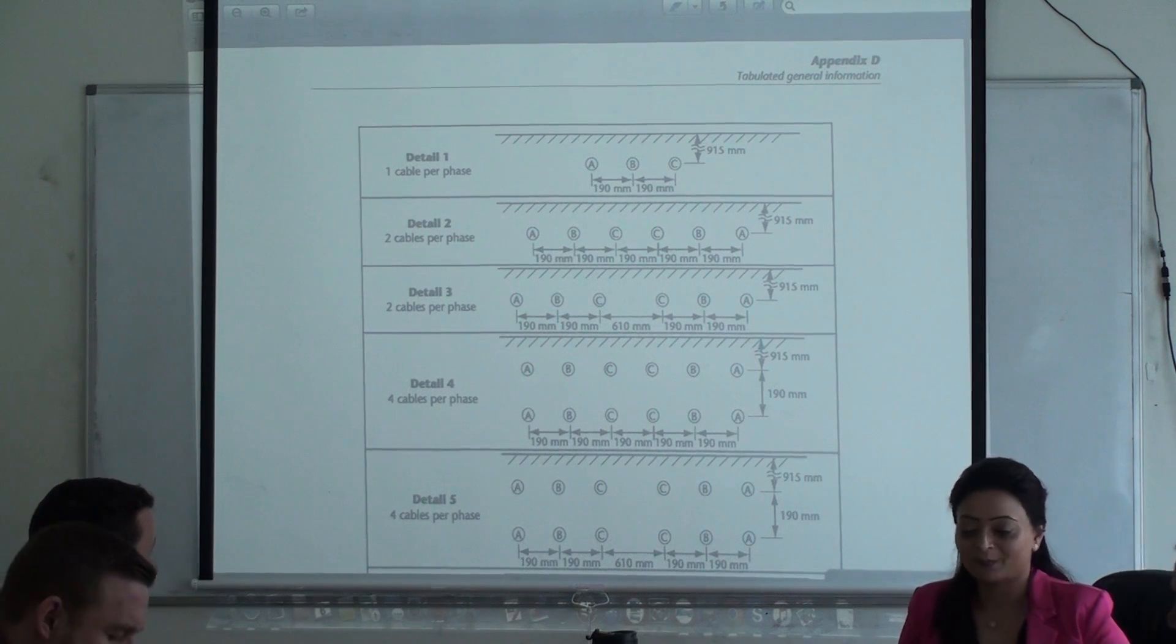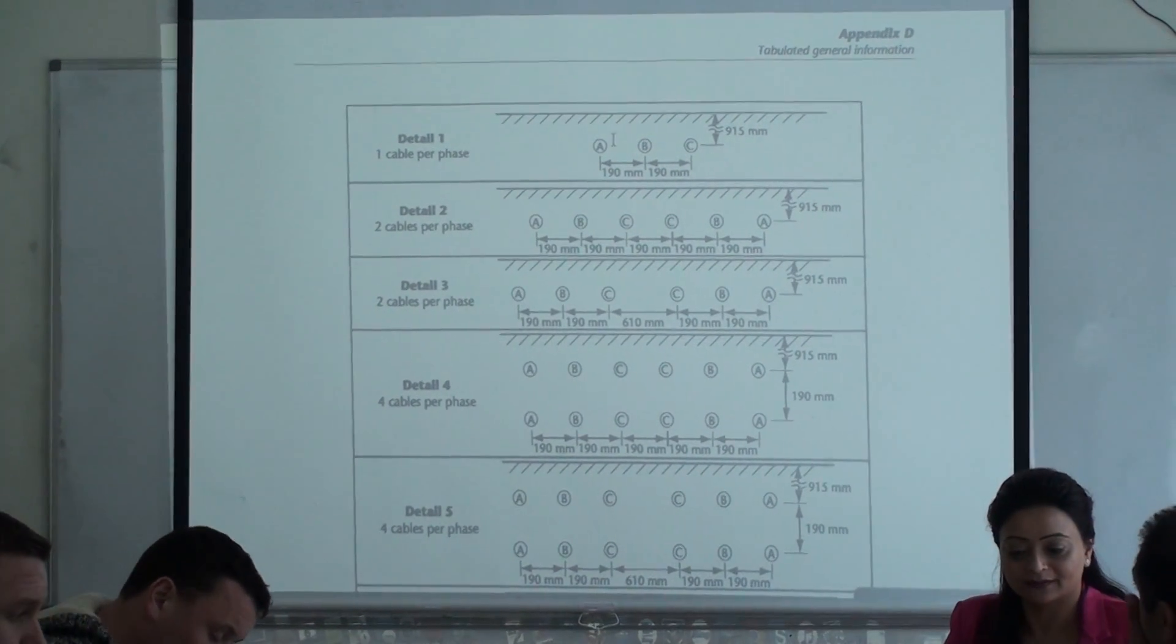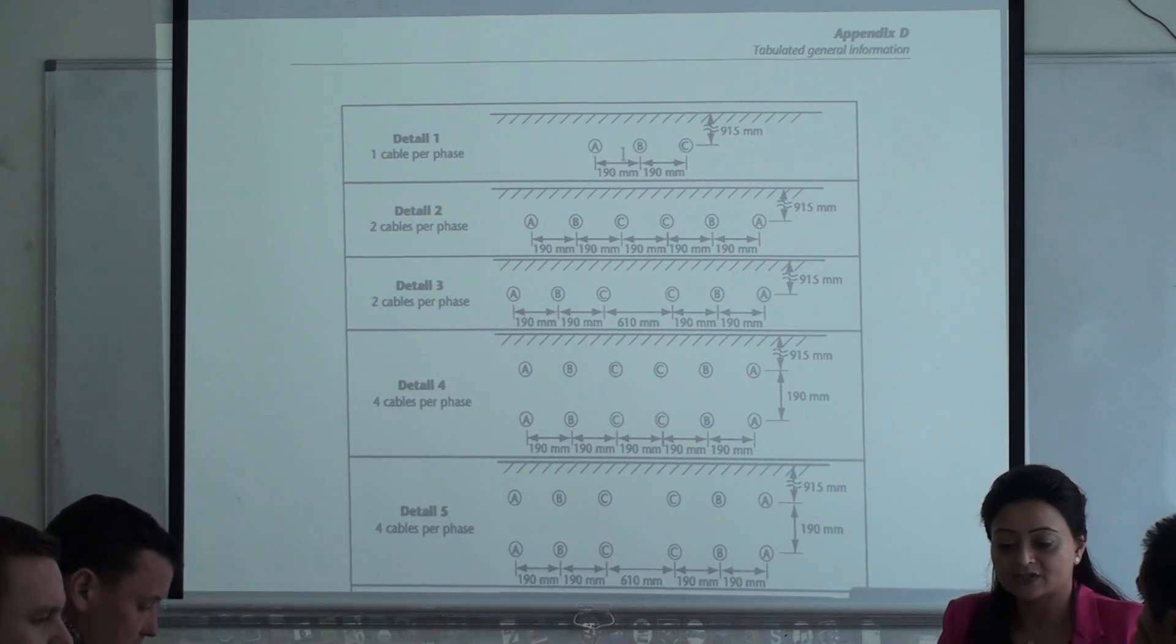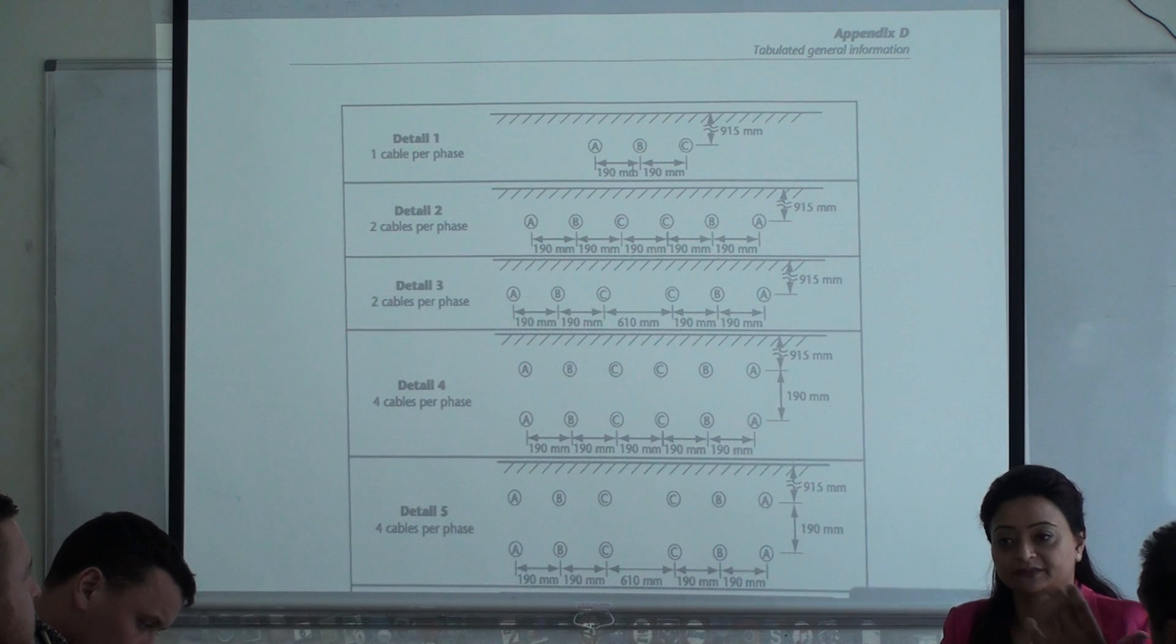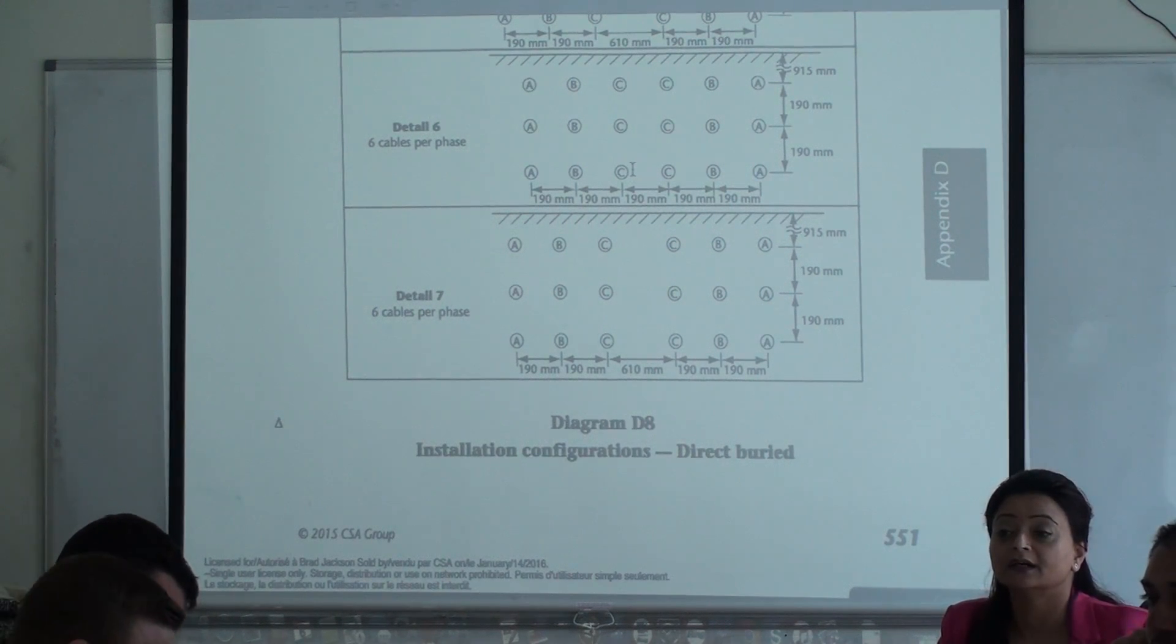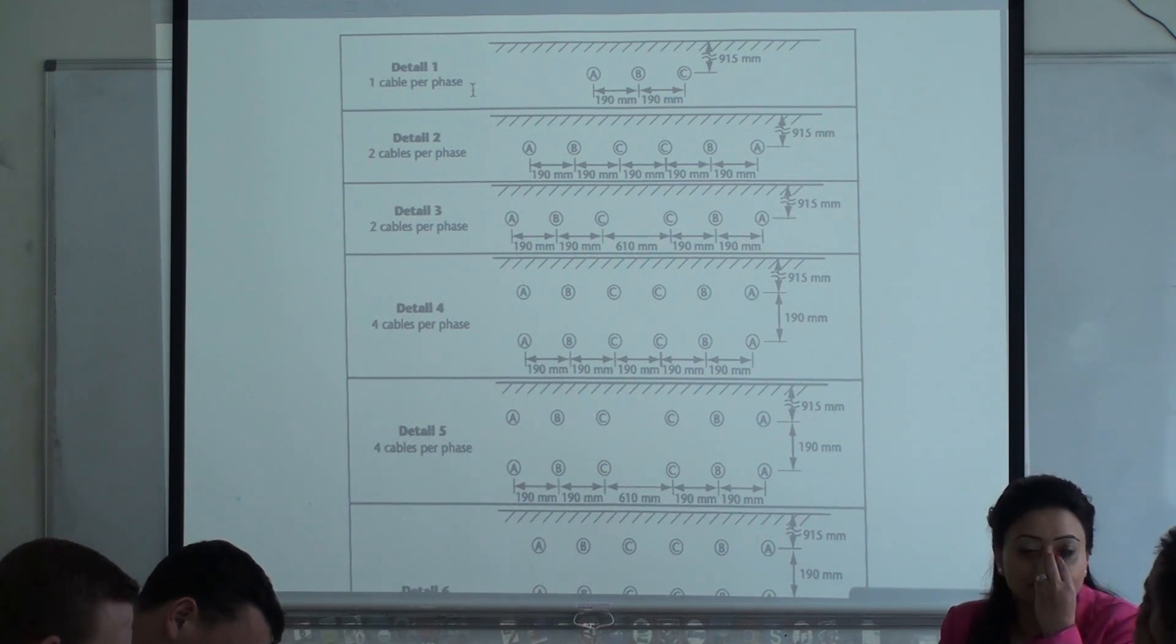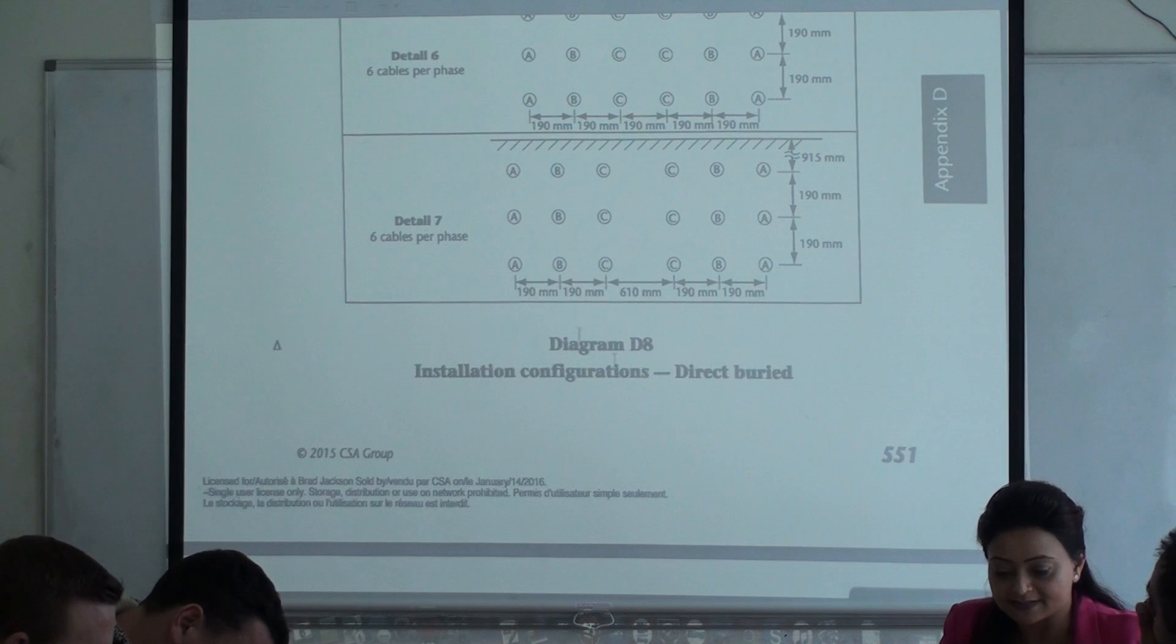Page 551. Are you guys with me on this one? Let's understand this nice looking diagram. If you see the top, this represents the floor level. Your conductors are placed 915 mm away or under the floor level. Circle A, circle B, circle C represents phase A, phase B and phase C wire. They are placed 190 mm from each other. We are on page number 551. Alright guys, so let's say I was told I am installing a copper wire. The keyword will be in your exam directly buried.